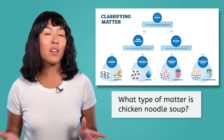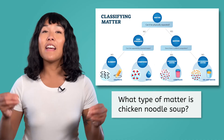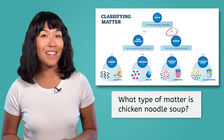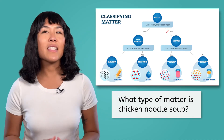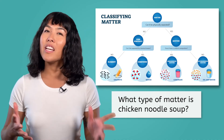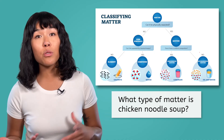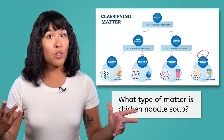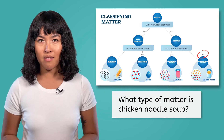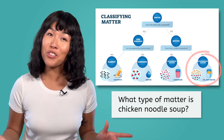What type of matter is chicken noodle soup? Starting at the top: can it be physically separated? Yes, it can. Next question: does it have a uniform composition? Well, each scoop from the pot will have a different combo of noodles, chicken, and veggies, so no, it does not have a uniform composition. That means that our chicken noodle soup is a heterogeneous mixture.